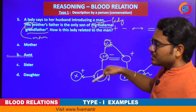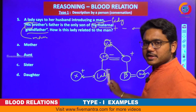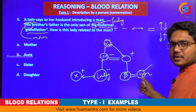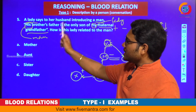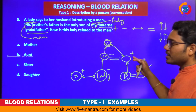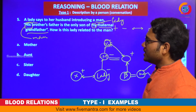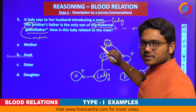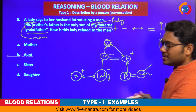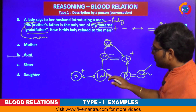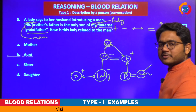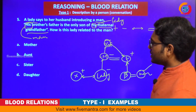Let us cross-check. Who is speaking? The lady is speaking to her husband. She is introducing another person — a man. His brother's father is the only son of her maternal grandfather. This particular person — let us name him F — is the only son of the lady's maternal grandfather. So the relationship tree is identified and drawn based on this.